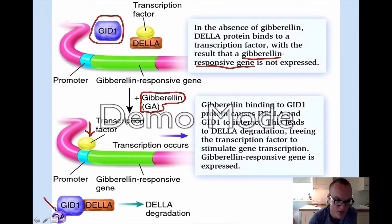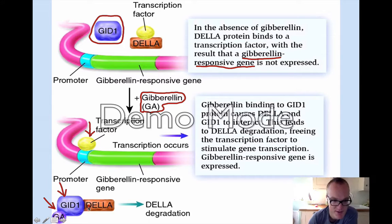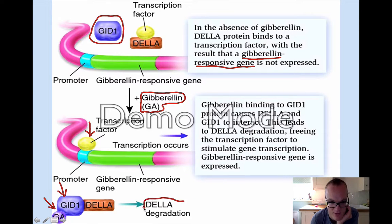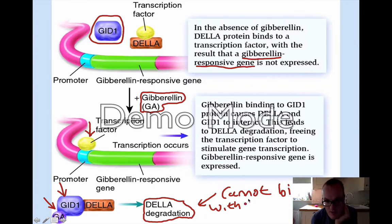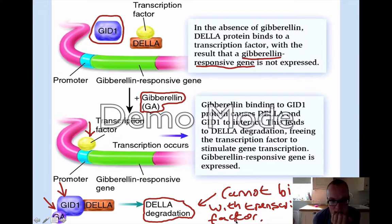When gibberellin (GA) binds with the GID1 receptor, it changes the conformation of GID1 and allows it to bind to DELLA — it's like an allosteric protein with two different binding sites. When GID1 binds to the DELLA protein it causes a series of steps which results in the breakdown of the DELLA protein. Once it's broken down, it can no longer bind with the transcription factor, and the gene is expressed.